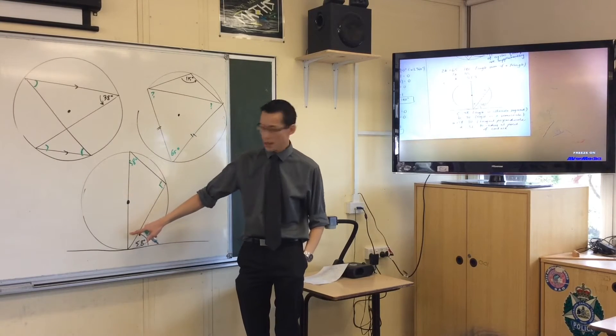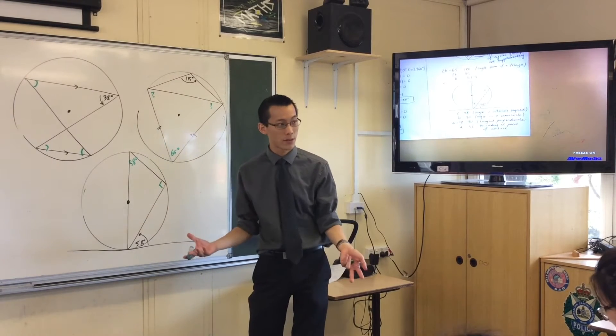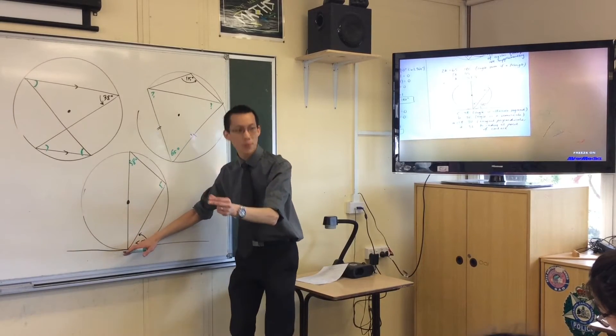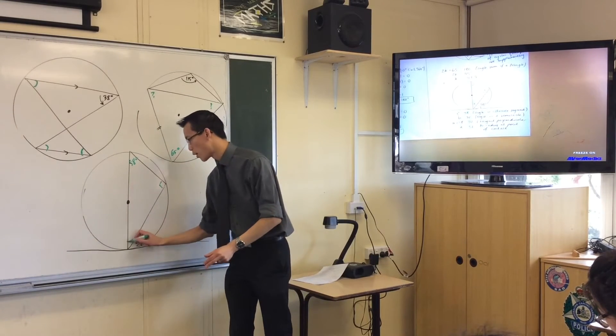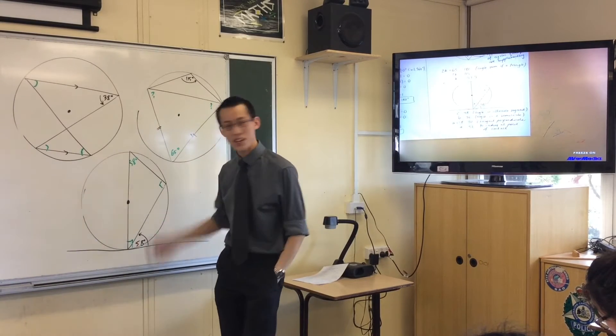Right, that's also going to work. And then you've got your last one here. You can either angle sum of the triangle, because I have the other two angles now. Or alternatively, the tangent is perpendicular to the radius at the point of contact. So this must be the complement of 58, which is 32. And you're done.